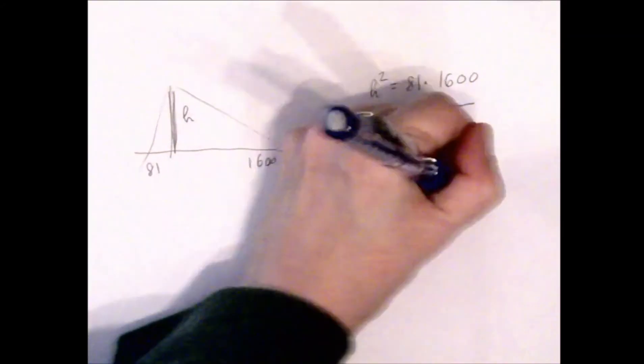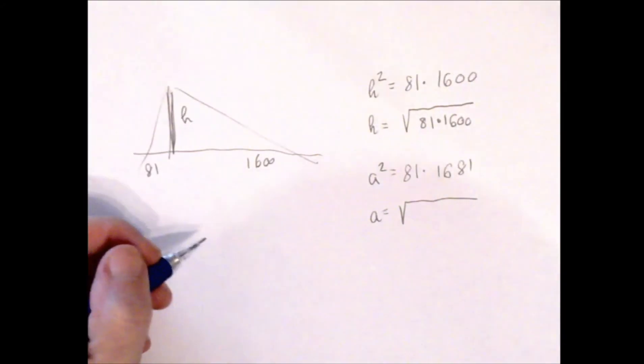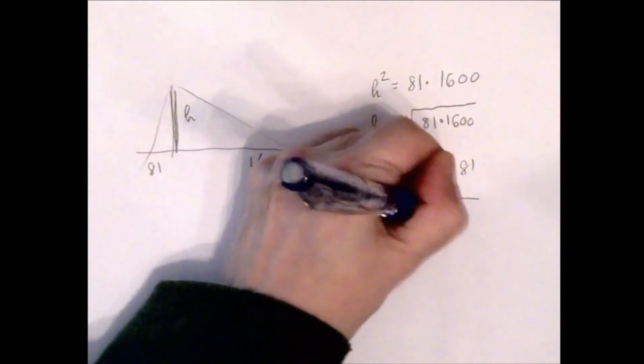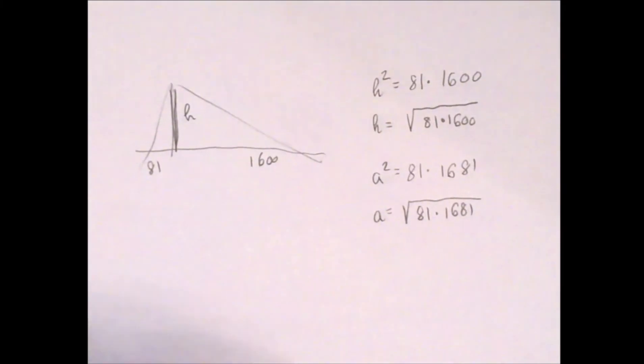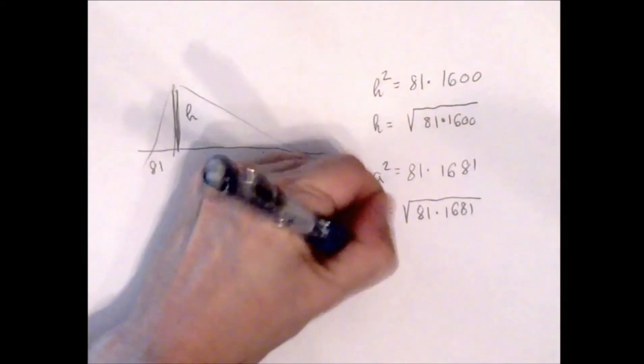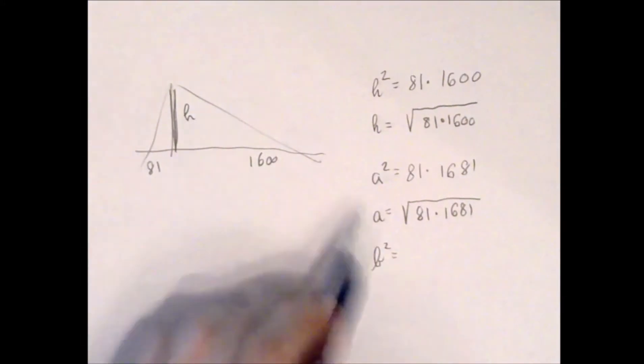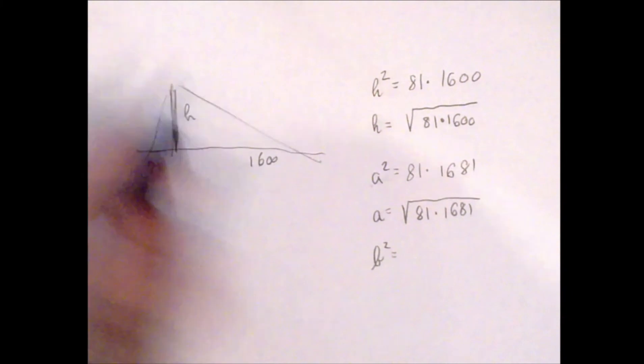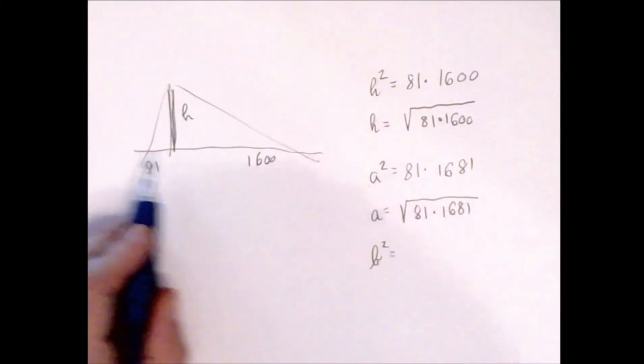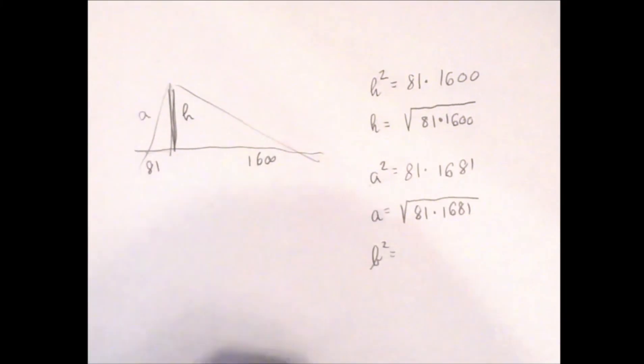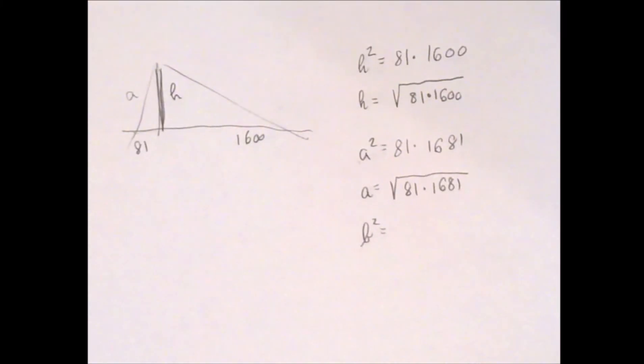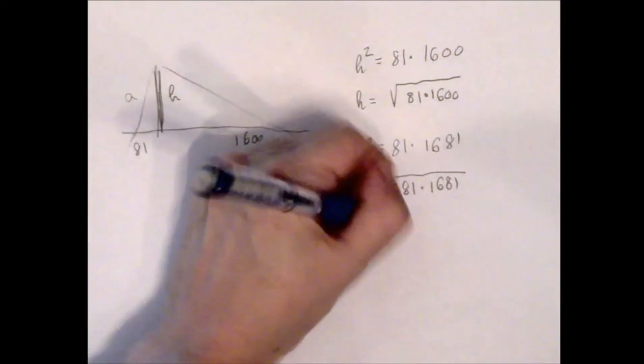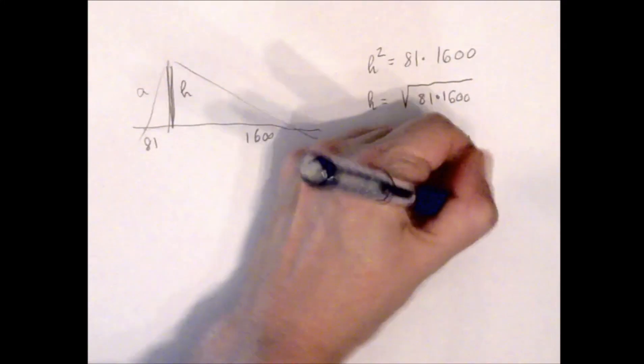Very similarly, we got a² to be 81 times 1681, which led to a being the square root of 81 times 1681. The third equation was similar as well: b² was the product of 1600 and 1681.